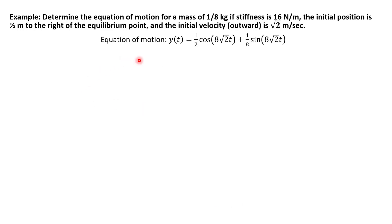Okay, so that's our answer. Our equation of motion is y equals one-half cosine of eight square root two t, plus one-eighth sine of eight square root two times t. Now we're going to actually also find the alternative form of this equation, so we need to do a little bit more work to get that one.